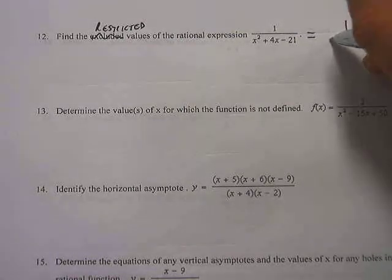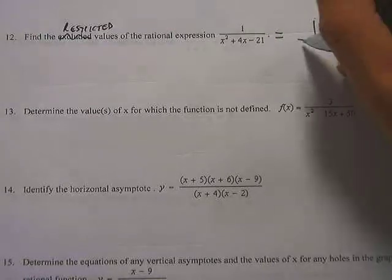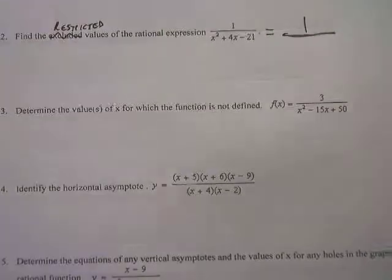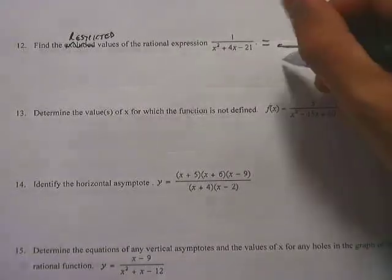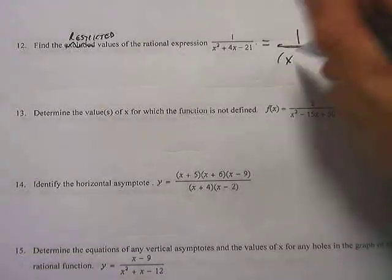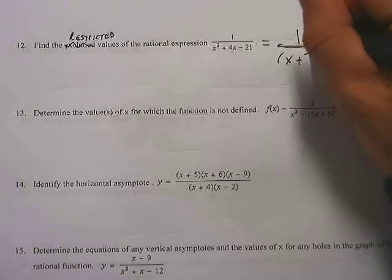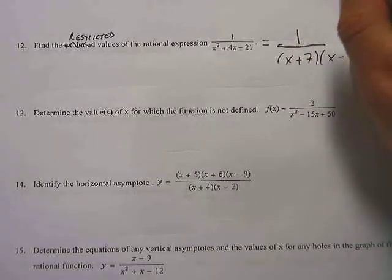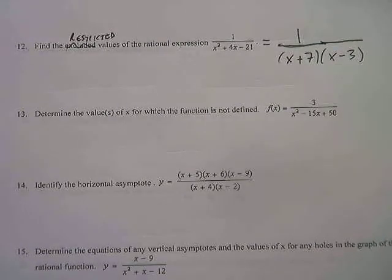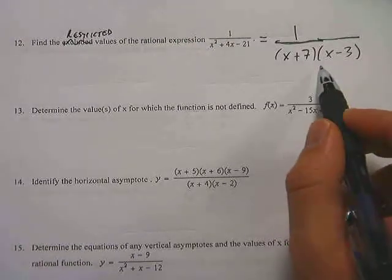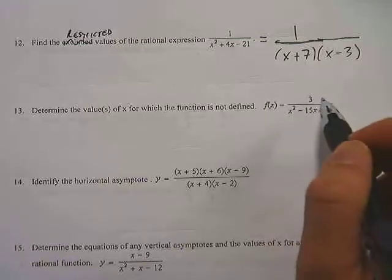I'm going to factor the bottom of this thing first. So in the denominator, I've got x squared plus 4x minus 21, and that's going to factor to (x + 7)(x - 3). That's what the factored form of that equation looks like on the bottom. Now, what we want to do is look at the denominator and see what would set it equal to 0, because you can't divide by 0.